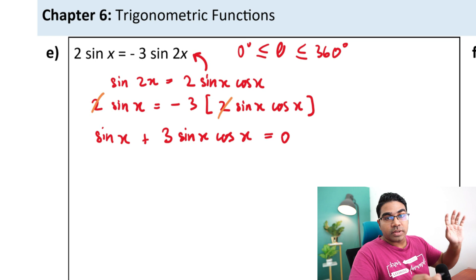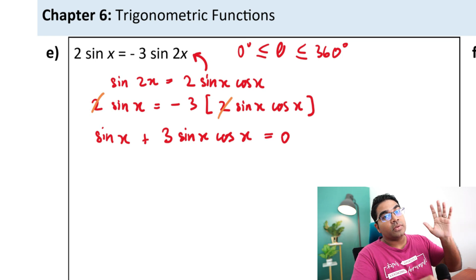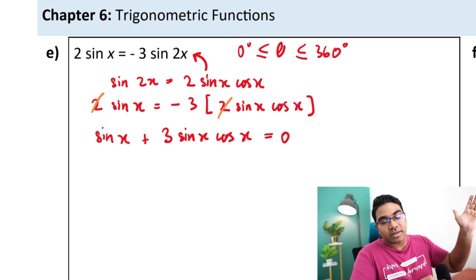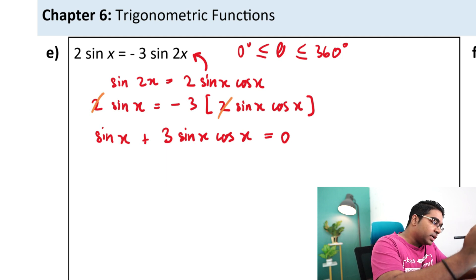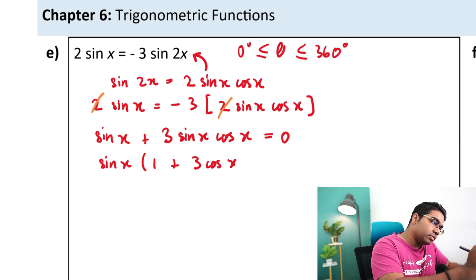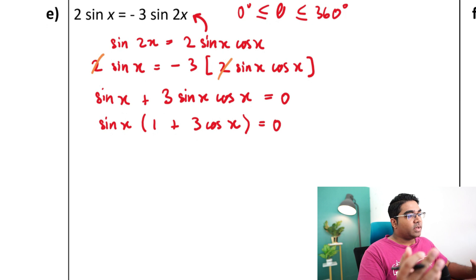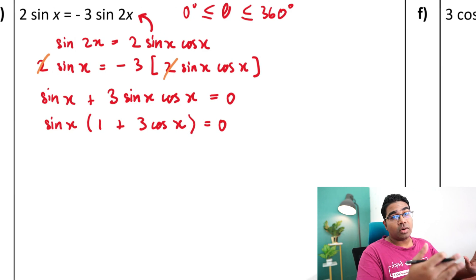Once again it's very tempting to divide by sine of x but if you divide by sine of x you are eliminating some of the solutions. I will show you what that means later at the end. So here let's factorize sine of x. Sine of x factorized what's left is 1 plus 3 cosine of x and this is equals to 0. And now since we have the form a times b equals to 0 therefore either a is 0 or b is 0.